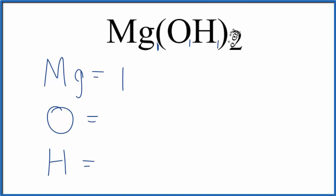But they're in parentheses, and the subscript 2, we multiply everything in the parentheses by the 2. So 2 times the 1, 2 oxygen atoms. 2 times the 1, 2 hydrogen atoms.